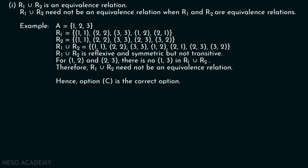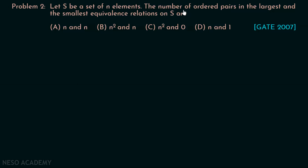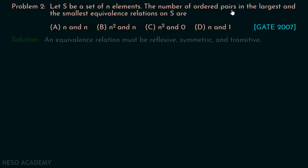Let's discuss problem 2. Let S be a set of N elements. The number of ordered pairs in the largest and the smallest equivalence relations on S are what? This question has been asked in GATE 2007. An equivalence relation must be reflexive, symmetric, and transitive.